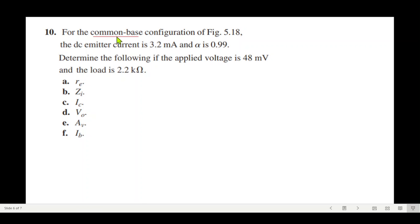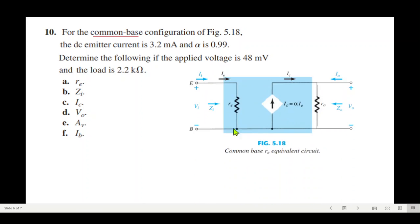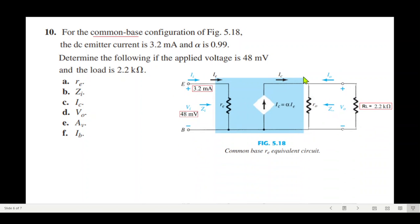Question number 10 is common base configuration. The circuit is for the common base and we'll plug in the values. The input current is given, input voltage is given in the question, alpha is given, and the load is given 2.2 kilo. Here also we have to find these five or six parameters.